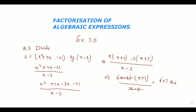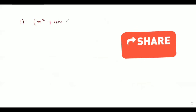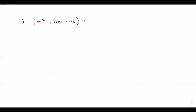Hope that question is clear. If any type of doubt is there, you can ask me by commenting in the comment box. Now let's come to the next part. The next part of question number 3 is m squared plus 21m minus 46, divided by m minus 2.